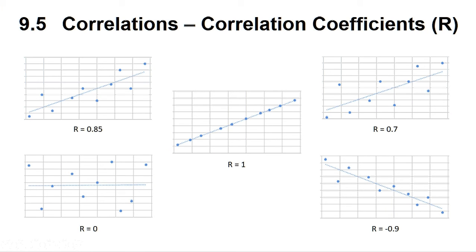That tells us how closely our data is linearly correlated, with 1 or minus 1 meaning perfectly correlated, while 0 means the points are not correlated at all.